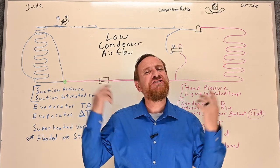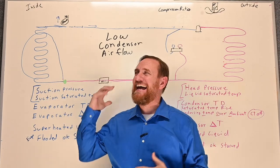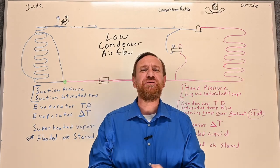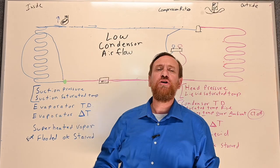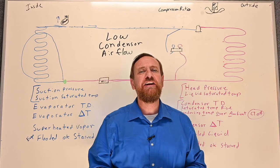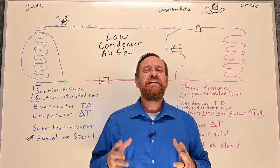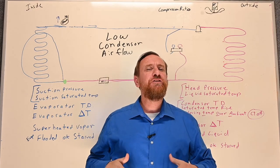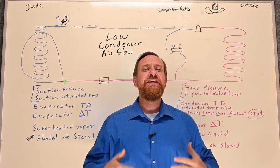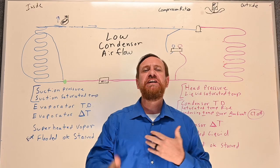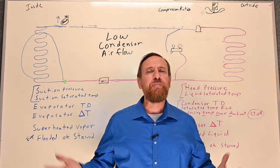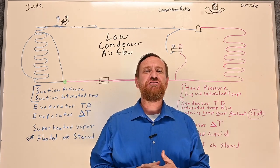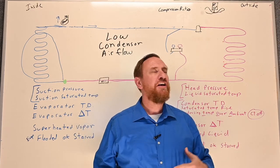Now that we understand our refrigeration cycle, let's add some more examples. This example is going to be low condenser airflow. These examples are not for you to memorize — they're for you to start understanding cause and effect, so you'll have an appreciation for how that refrigeration cycle works.